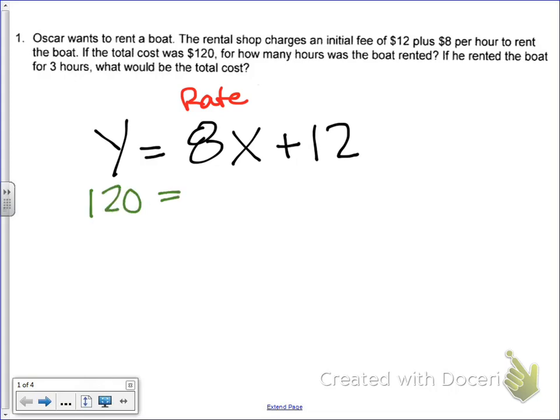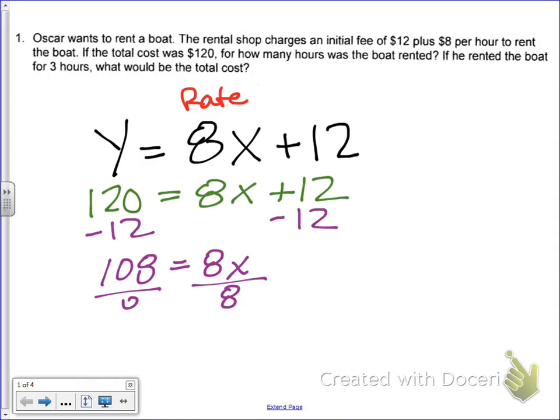And then it says how many hours was the boat rented? So again, I don't know how many hours. That's x. We need to figure out what x equals. So to get x by itself, we subtract 12. And we get 108 equals 8x. In order to get x by itself, we divide by 8. And you're going to get x equals 13.5.